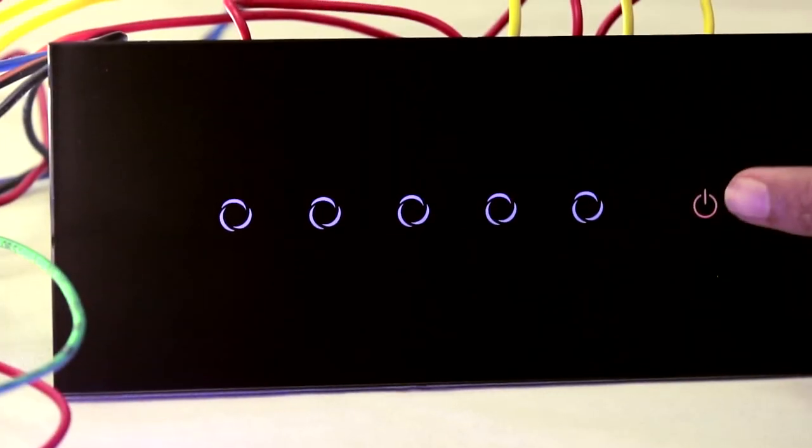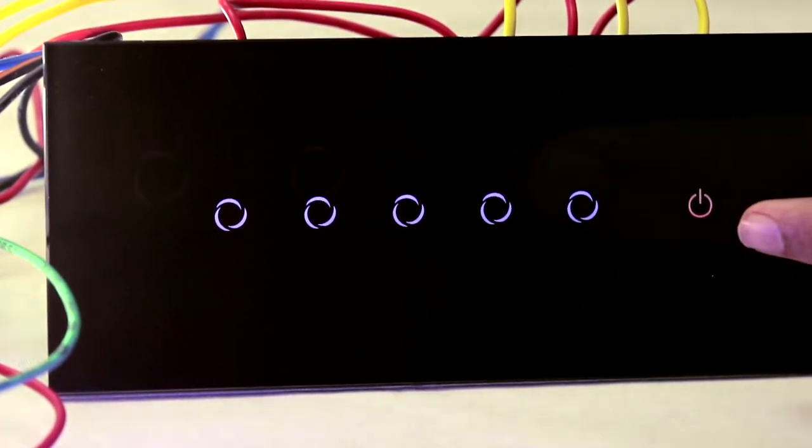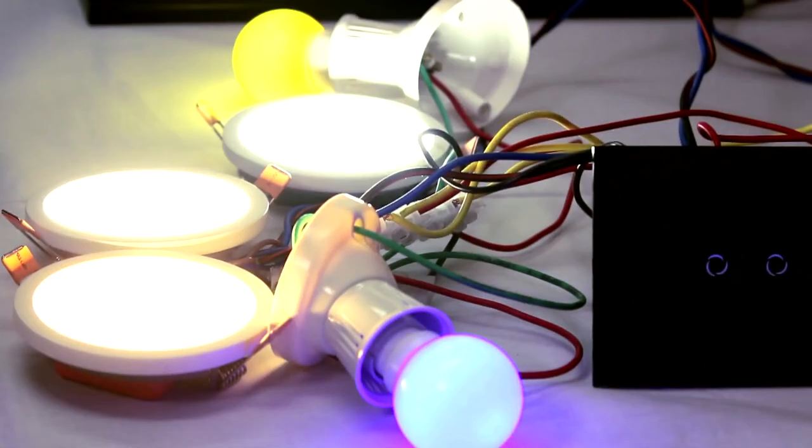The master switch symbol is either blue or red indicated by LED glow. On touching this symbol, either all the on switches get off or switches which were earlier off get on.